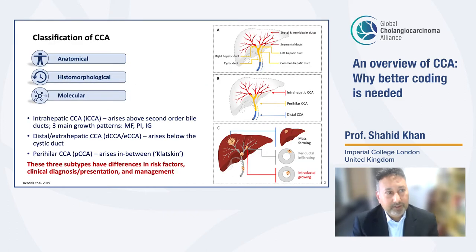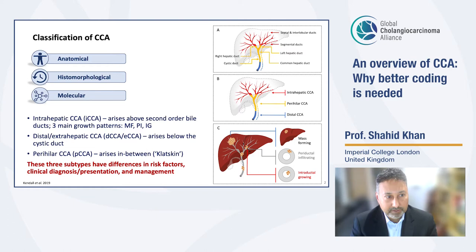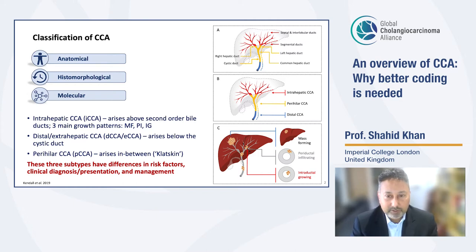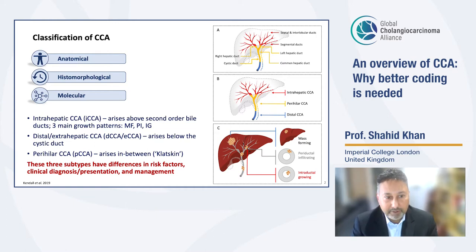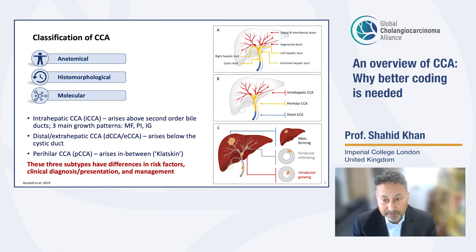As I'm sure you're aware, cholangiocarcinoma is subdivided into three main types depending on its anatomical location. Intra-hepatic cholangiocarcinomas arise in the biliary epithelium above the second-order bile ducts, whereas distal and extra-hepatic cholangiocarcinoma arise approximately below the cystic duct, and perihilar arise in between. These three subtypes differ in their underlying risk factors, how they present clinically, how they're diagnosed, and how they're managed.